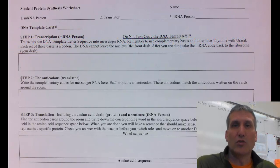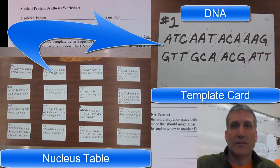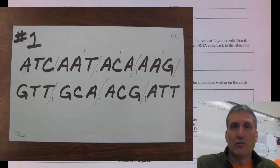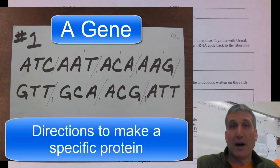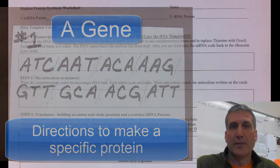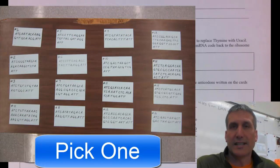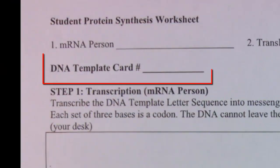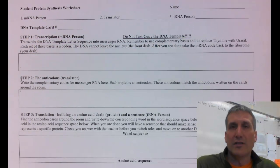The first thing you want to do is go to the table that contains the DNA template cards. These blue cards represent a gene, and these cards have the information to make a specific amino acid sequence, which makes a specific protein. So you want to pick one of the 16 DNA template cards and write the number on your student protein synthesis worksheet.